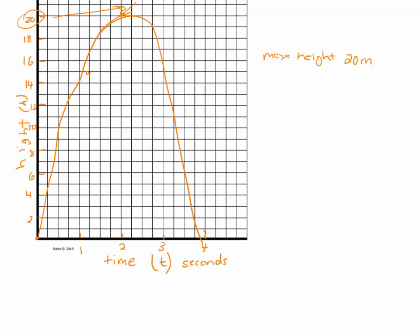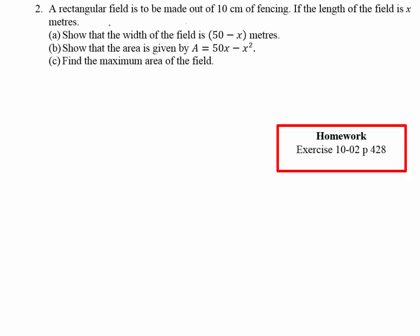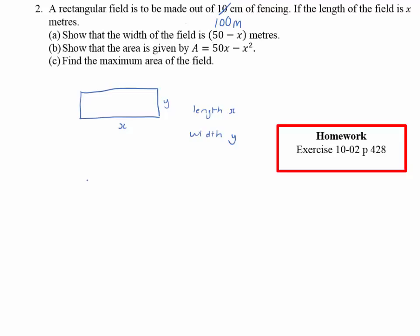This leads to the main HSC-style problem. A rectangular field is to be made using 100 meters of fencing. If the length of the field is x meters, show that the width is 50 minus x meters. Imagine a rectangular field with length x and width y. The perimeter is x plus x plus y plus y, which must equal 100.